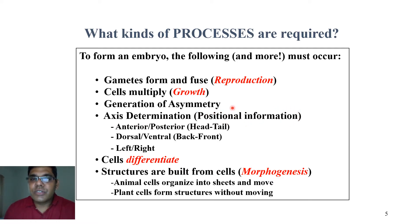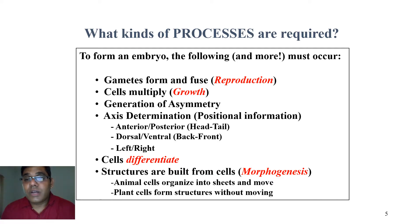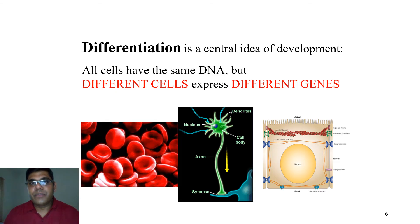Positional information comes into picture — the body divides into anterior and posterior parts, meaning the head part and the tail part, and further into dorsal and ventral parts, meaning back and front. As you go further, you see left and right. During this time the cells differentiate, giving rise to different organs. Structures are built from cells by a process called morphogenesis. Animal cells organize into sheets and move, whereas plant cells form structures without movement.